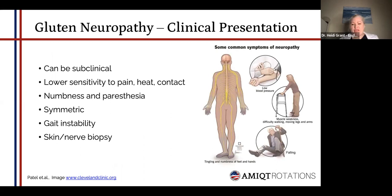It's about two and a half times greater risk in celiac patients versus the general population. Neuropathy affects motor, sensory, autonomic, or a combination. With gluten neuropathy, you typically get sensory-motor involvement. It can be subclinical, or patients may have lower sensitivity to pain, heat, and contact. They can get numbness and paresthesia. Typically it's symmetric, and if it's symmetric in the lower legs it's going to affect the gait, cause instability, falls, disability, and increased morbidity — having a profound impact on quality of life.